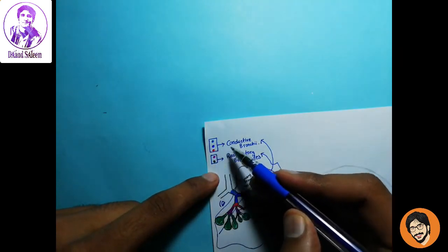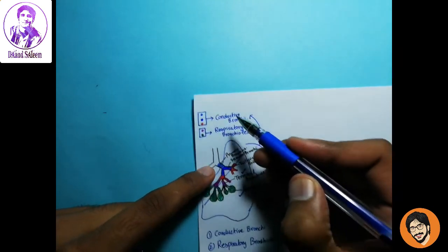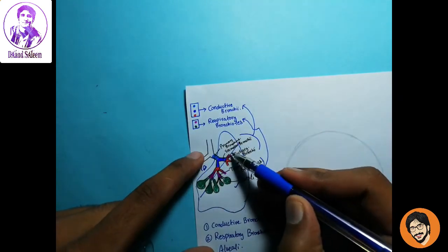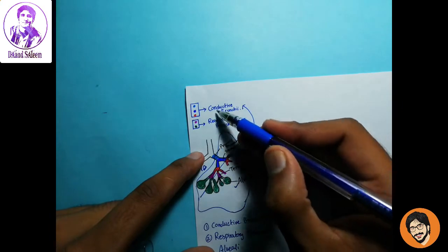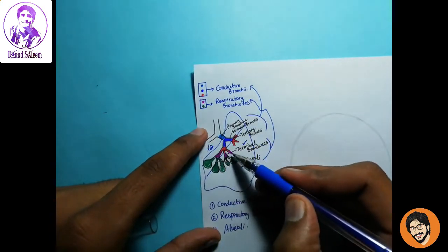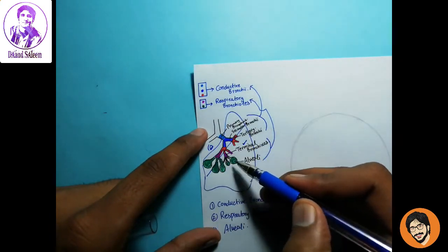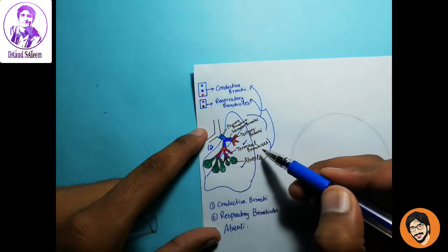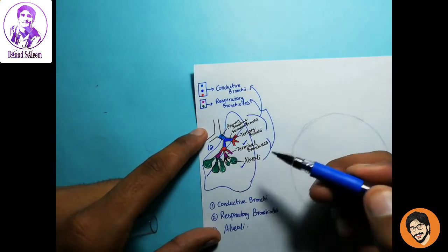Blue, Red. 5. Conductive bronchiole. 5. Primary. 6. Secondary. 6. Tertiary. 6. Conductive. 7. Purple. 7. Terminal bronchiole. 5. Red. 5. Alveoli. 7.